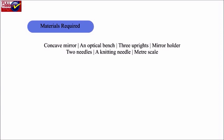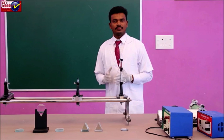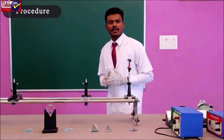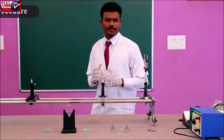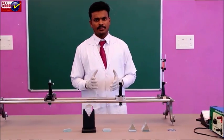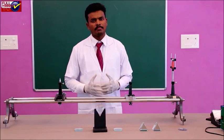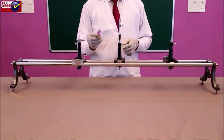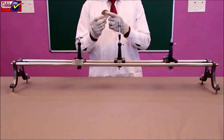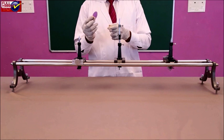Materials Required: Concave mirror, an optical bench, 3 uprights, mirror holder, 2 needles, a knitting needle, and meter scale. A concave mirror forms a real image except when the object is between F and P, hence its focal length can be found using the direct method.